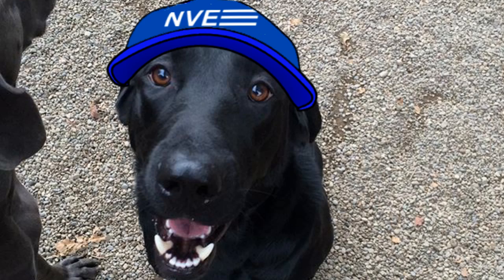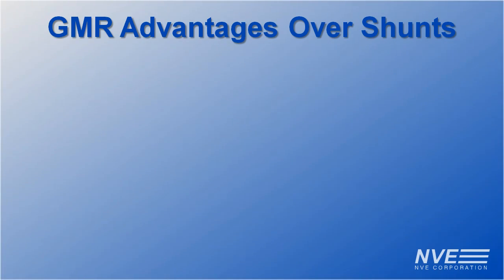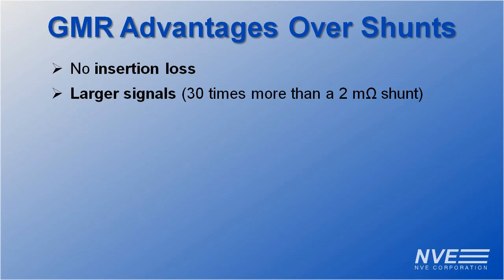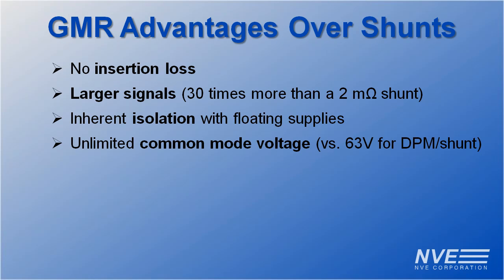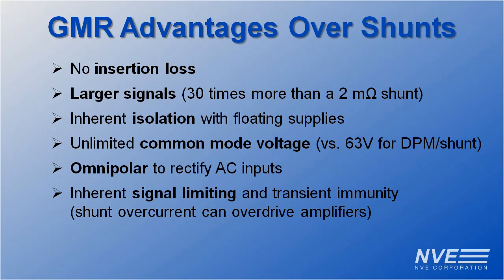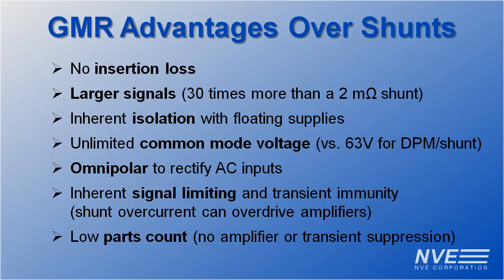So the lab results are in. GMR sensors are ideal for use with DPMs. There's no insertion loss and therefore no self-heating or thermal errors. They have much larger signals than a shunt and don't require an amplifier or transient suppression. There's inherent isolation and therefore unlimited common-mode voltage. They inherently rectify AC signals. And the sensors have inherent signal limiting and transient immunity, which can minimize parts count.